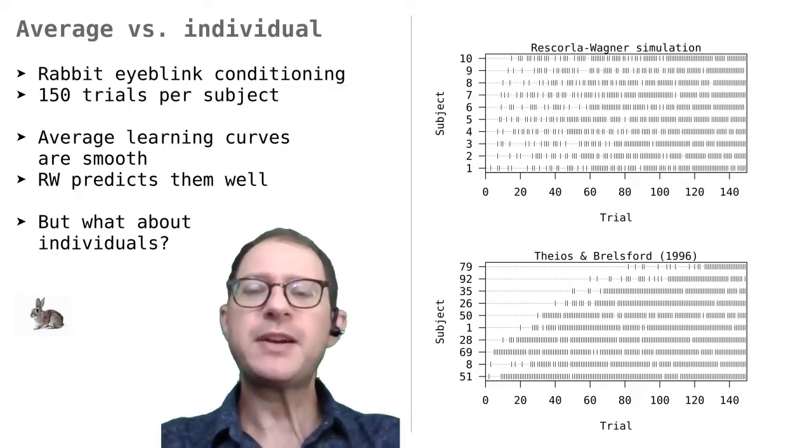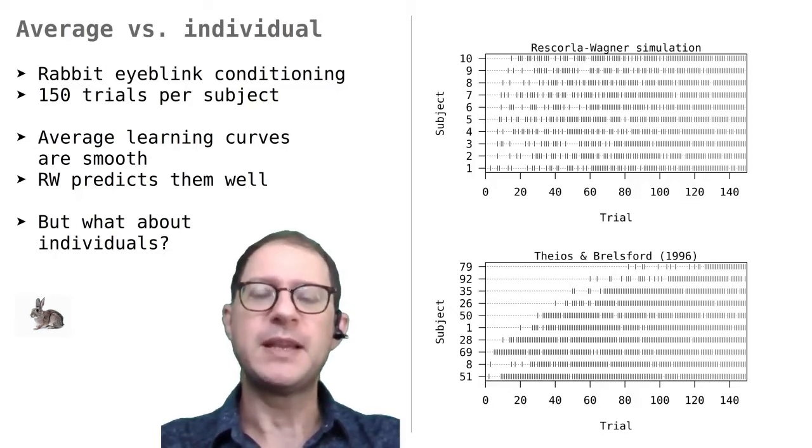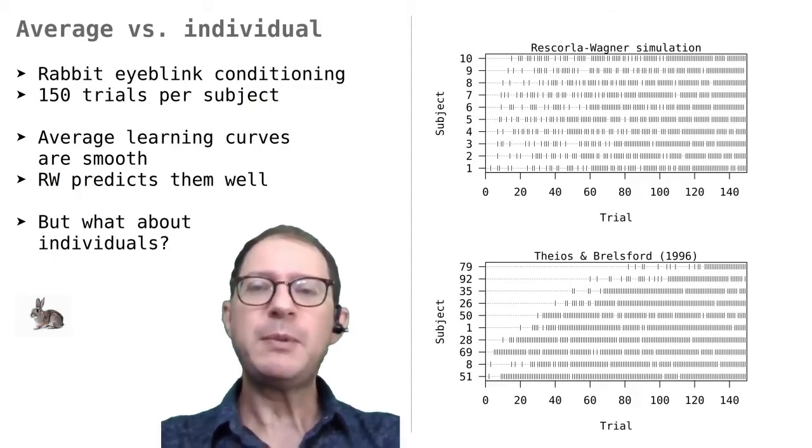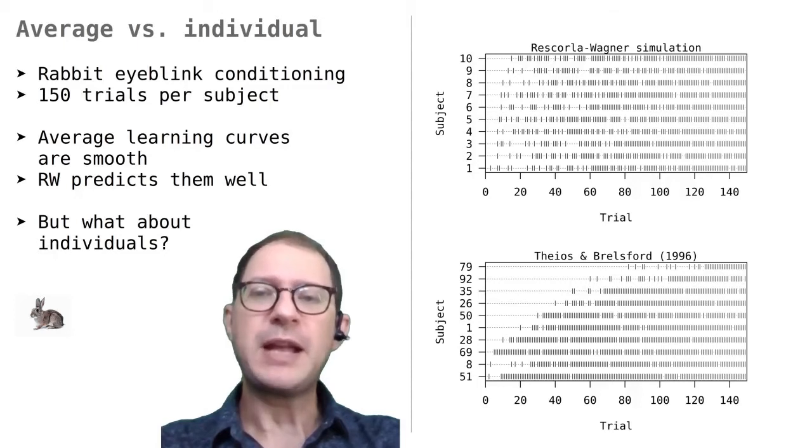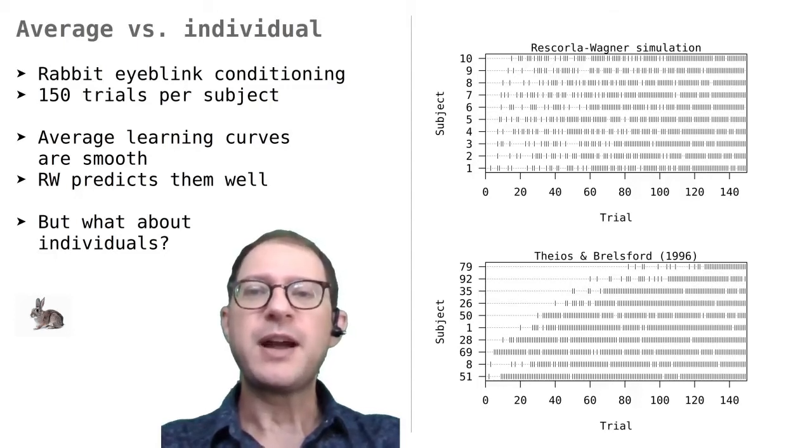For example, here are some simulations of the RW model for individual rabbits. As you can see, these simulated rabbits that precisely conform to the RW model do not really look like the empirical records that we see in the Theos and Brelsford experiment. Most of the RW rabbits start responding pretty early and they increase their responding gradually. In other words, the RW rabbits mimic at the individual level what we saw at the group level.